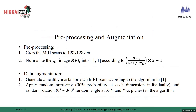multiplied by 2, subtract 1. There are also two steps in our data augmentation. We firstly generate 5 healthy masks for each MRI scan according to the algorithm in reference 1. We secondly apply random mirroring with 50% probability at each dimension individually, and random rotation from 0 to 360 degrees at random angles in the x, y, and z planes.